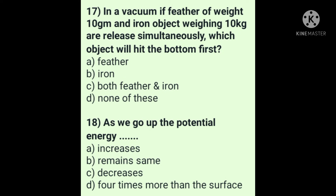Question 18: As we go up, the potential energy increases — answer is option A. The formula for potential energy is mgh, which is directly proportional to mass, g, and height from the surface of the earth. So as we go higher, height increases and potential energy also increases.